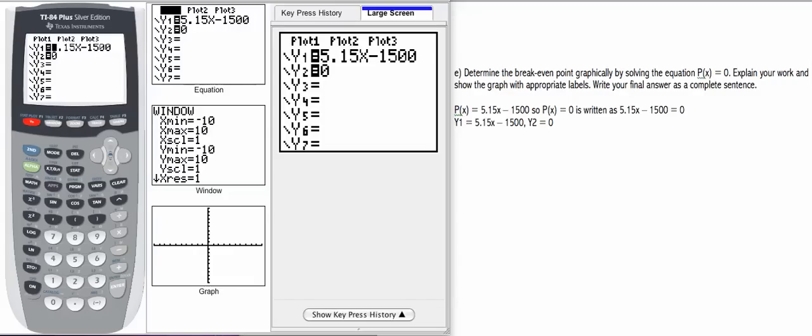For the last part of this problem, we're asked to determine the break-even point graphically by solving the equation p of x equals 0. We already found p of x, our profit function, in a former part of this problem.